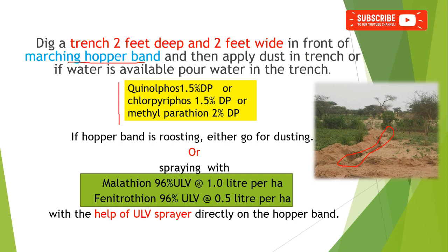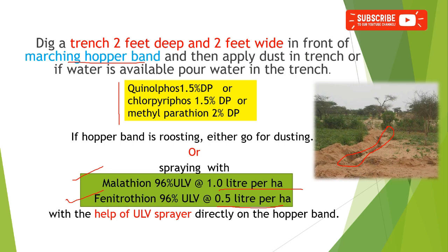If the hopper band or locust band is roosting, go for dusting or spraying with ultra low volume formulations such as Malathion 96 percent at the rate of 1 liter per hectare or Fenitrothion 96 percent at the rate of 0.5 liter per hectare, applied using an ultra low volume sprayer directly onto the hopper band.